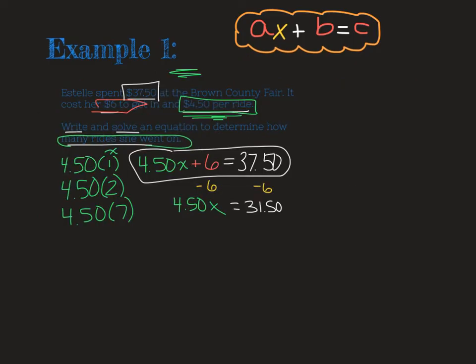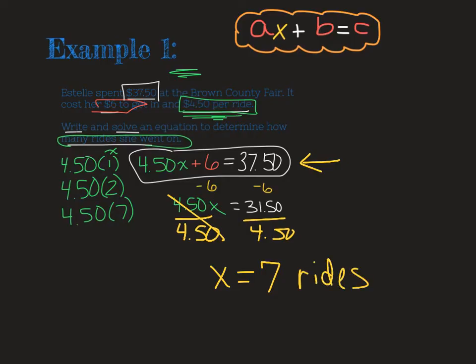So to figure out how many rides she was able to go on, we'd have to do the inverse of multiplying it by $4.50, which means we're going to divide it by $4.50. And again, I'm showing my work on both sides of my equation. And I'm going to find out that she was able to go on seven rides. So here's my equation. Here is my solution. I'm going to go ahead and put a label on that as well. We're looking for both parts of that for a complete answer.